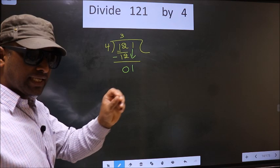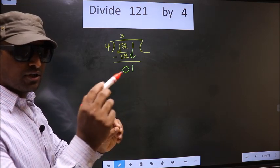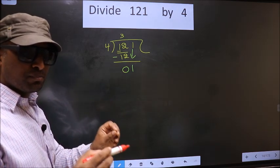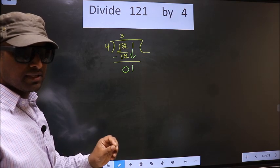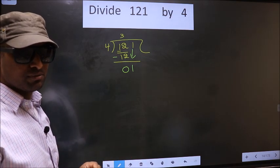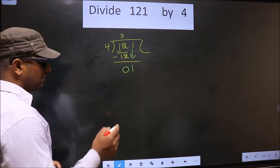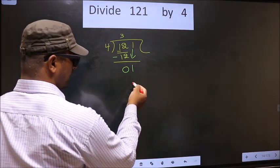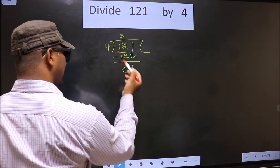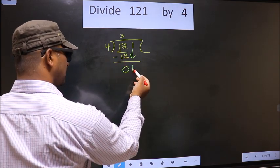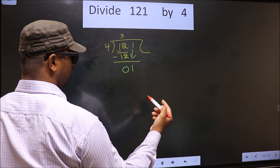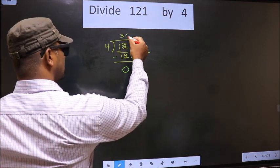I repeat, bringing the number down and putting a dot and taking 0, both at the same step, you are not supposed to do. Instead, what you should think of is, what number should we write here? If we write 4, that will be larger than 1. So what we do is, we take 0 here.